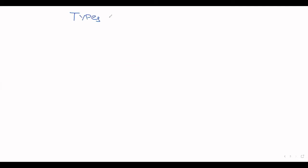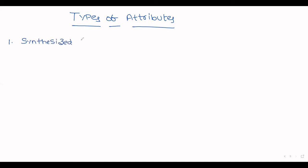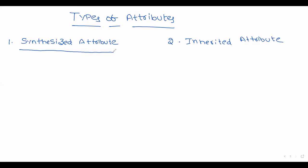This is the basic introduction to Syntax Directed Definition. Next we move to types of attributes. Attributes are characterized into two types: one is synthesized attribute, and the second is inherited attribute. For a synthesized attribute, the definition is: if a node takes its value from its children, then it is called a synthesized attribute.